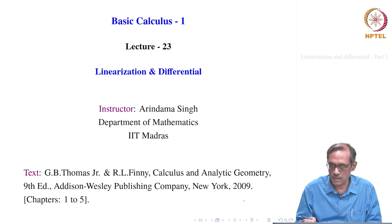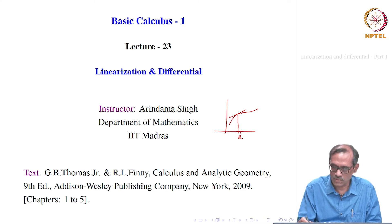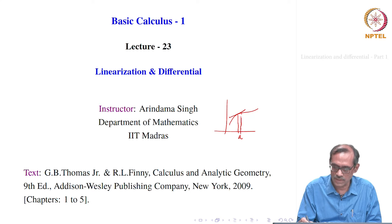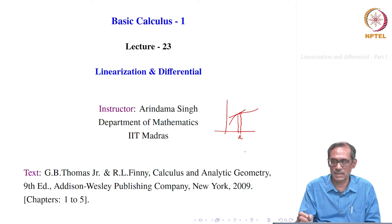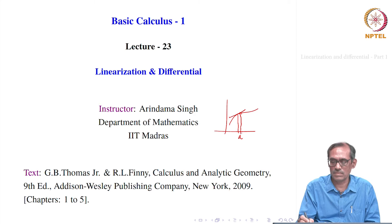The idea is very simple. Suppose you have a function, you consider its graph, and then at a point a, you have a tangent. At a plus delta, where delta is small, we have f of a plus delta. You extend that vertical line and it touches the tangent somewhere. The value of f of a plus delta is approximated by where this vertical line crosses the tangent. One number is on the curve, another is on the tangent. The height we get from the tangent is approximately equal to the height from the curve — that is the notion of linearization.